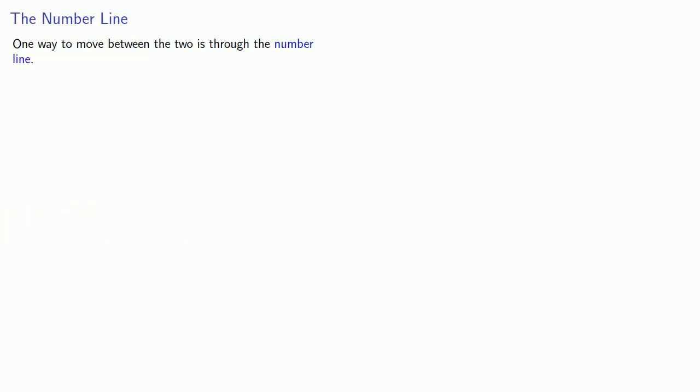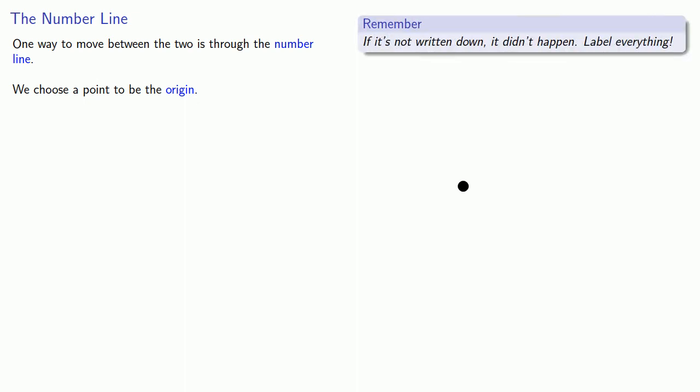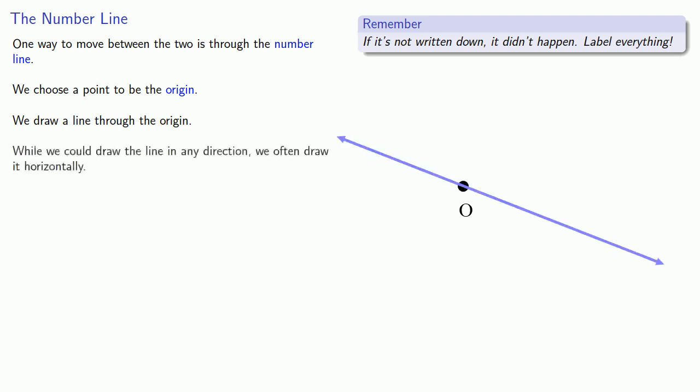So one way to move between the two is through the number line, and this emerges as follows. We choose some point, some place, to be the origin. And an important idea here is that if it's not written down, it didn't happen. Label everything. Once we decide where the origin is, let's label this point as the origin. We'll use O for short. And we draw a line through the origin. Now, while we could draw the line in any direction that we want to, we often draw it horizontally.